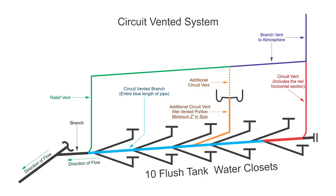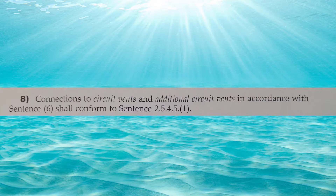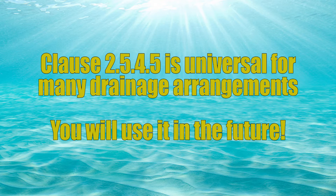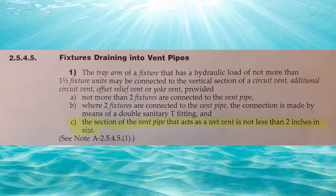Now there are some regulations as to what type of fixture can connect into that additional circuit vent. Let's read Part 8 to figure out what. Clause 2531 Part 8: connections to circuit vents and additional circuit vents in accordance with sentence 6 shall conform to sentence 2545 Part 1. If you're in my class, Clause 2545 is a very important clause — it's going to come up with a lot of different drainage systems, so please commit it to memory.